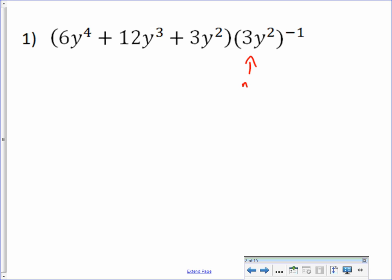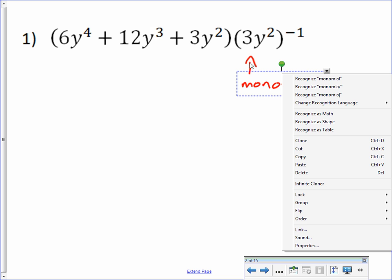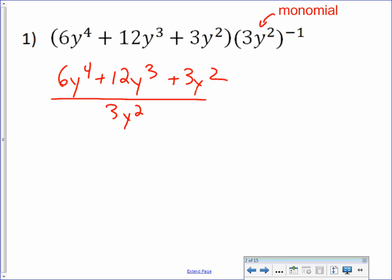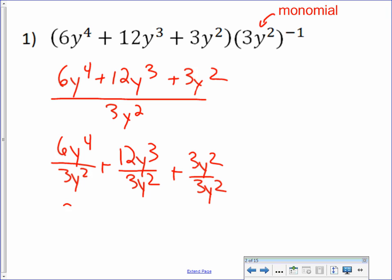This is a monomial, so we don't have to do either synthetic or long division. Remember, you can rewrite this whole thing as 6y to the 4th plus 12y to the 3rd plus 3y squared all over 3y squared, which means I can write each piece like this, and breaking it up like this works because the bottom is a monomial and we can divide each term individually.